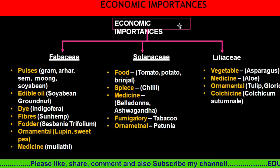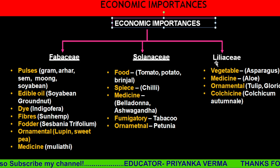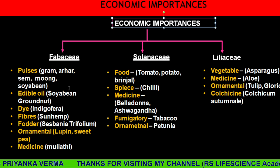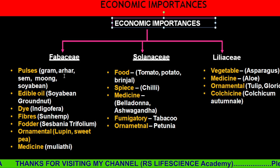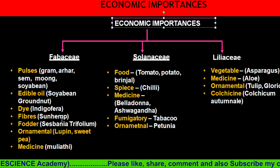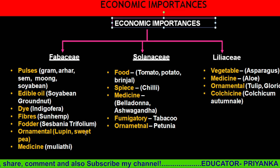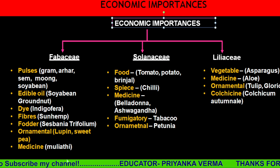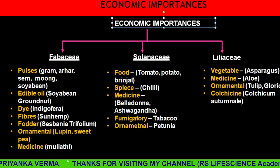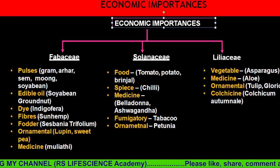Now let's talk about economic importance. In the Fabaceae family, we mostly study pulses: gram, arhar, moong, soya bean, ground nuts. There is also edible oil, dye from indigofera, fiber from sunn hemp, food from sesbania and trifolium, ornamental plants like lupine and sweet pea, and medicinal plants like mulli, which is used to relieve cough. So in the Fabaceae family: pulses, edible oil, dye, fiber, food, and ornamental plants.